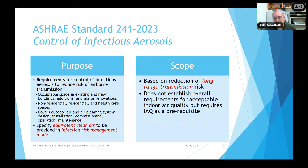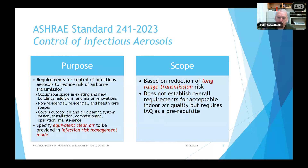What the standard does is specify what we call equivalent clean air, which I'll define shortly. That requirement is to be used in infection risk management mode, which I'll also define. The standard is based on controlling long-range transmission, not short-range droplet transmission. And it's important to note that because we define infection risk management mode, it isn't a replacement for existing indoor air quality standards — it's an addition to them to deal with a special requirement that may occur from time to time.